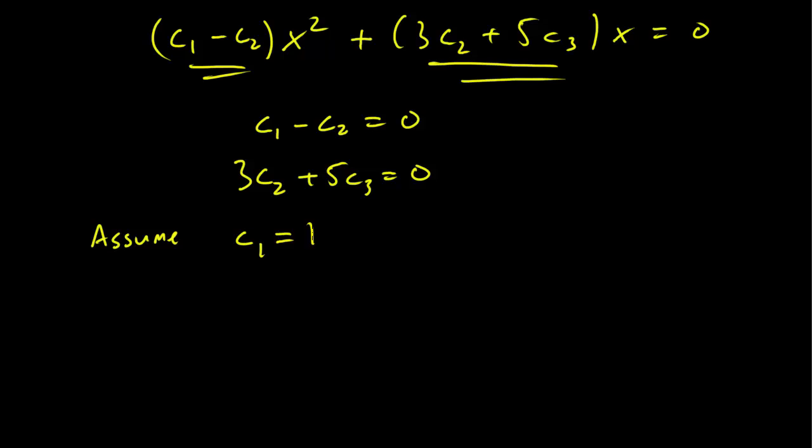One thing you want to do is pick a number that's not zero. Because if it's zero, you might get the zero zero zero solution, which you don't want. So let's just assume c1 equals 1. This is completely arbitrary. There's no magic to this.